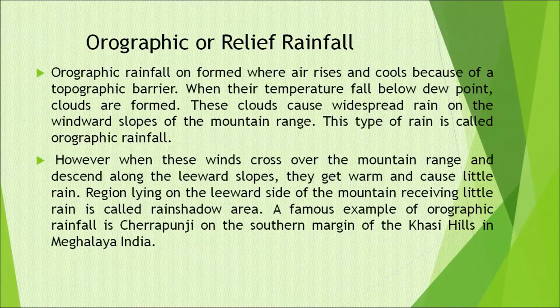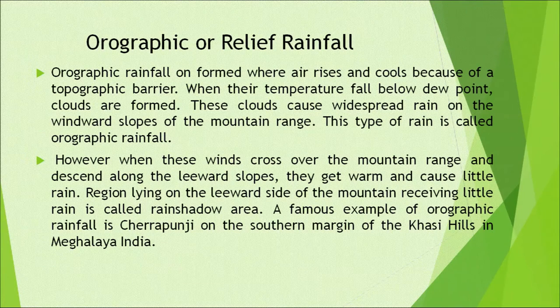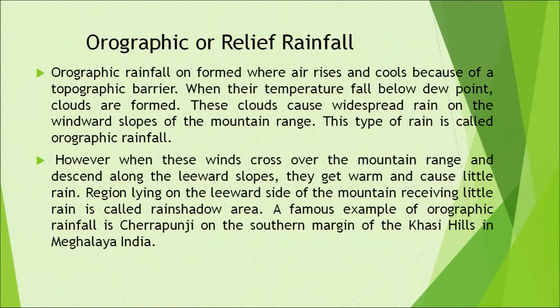The second type is orographic or relief rainfall, formed where air rises and cools because of a topographic barrier. When temperature falls below dew point, clouds are formed that bring widespread rain on the windward slopes of the mountain range. When these winds cross over the mountain range and descend along the leeward slope, they get warm and cause little rain. The region lying on the leeward side of the mountain receiving little rain is called a rain shadow area. A famous example of orographic rainfall is Cherrapunji, on the southern margin of the Khasi Hills in Meghalaya, India.